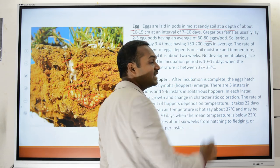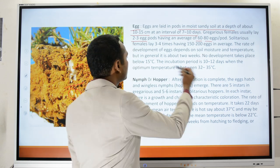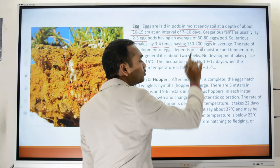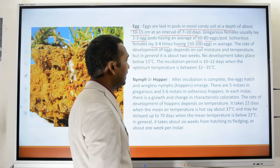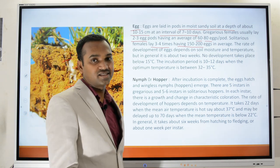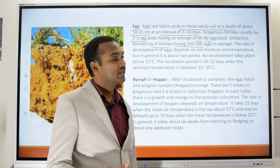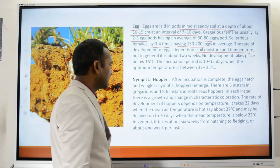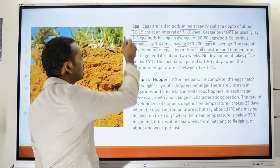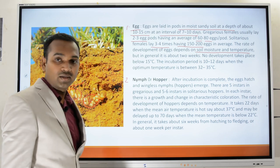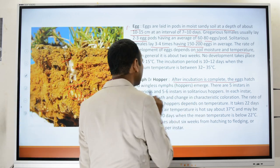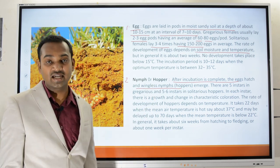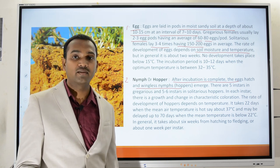Solitary females lay 3 to 4 pods with an average of 150 to 200 eggs per pod. The rate of development of eggs into nymphs depends upon soil temperature and moisture. After incubation is complete, the eggs hatch and wingless nymphs or hoppers emerge. The only stage where the locust can fly significant distances is the adult stage, since eggs cannot fly and nymphs lack wings.